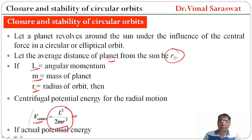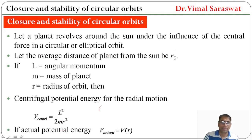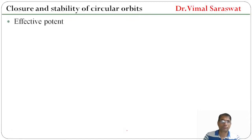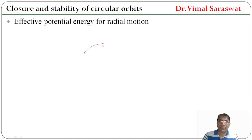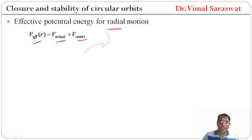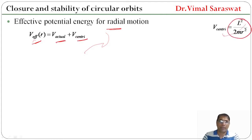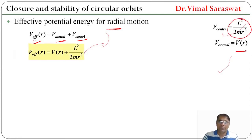If the actual potential energy is V_actual = V(r), then the effective potential energy for radial motion will be V_effective = V_actual + V_centrifugal, which equals V(r) + l² / (2mr²).